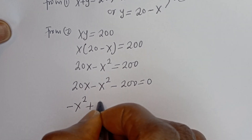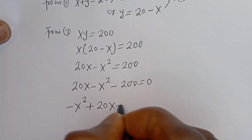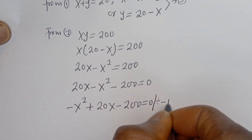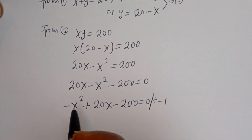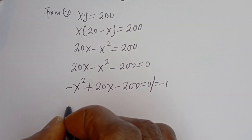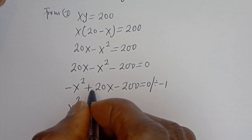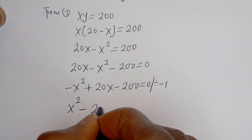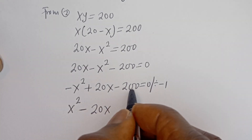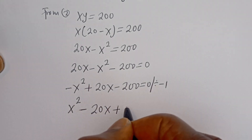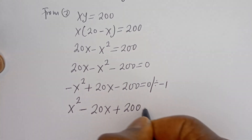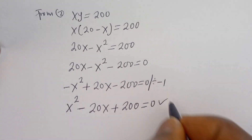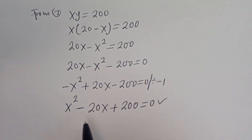We have 20X minus X squared minus 200 is equal to 0. This is minus X squared plus 20X minus 200 is equal to 0. Let's divide all through by minus 1. Then we get X squared minus 20X plus 200 is equal to 0. This is a quadratic equation. Let's solve using the quadratic formula.